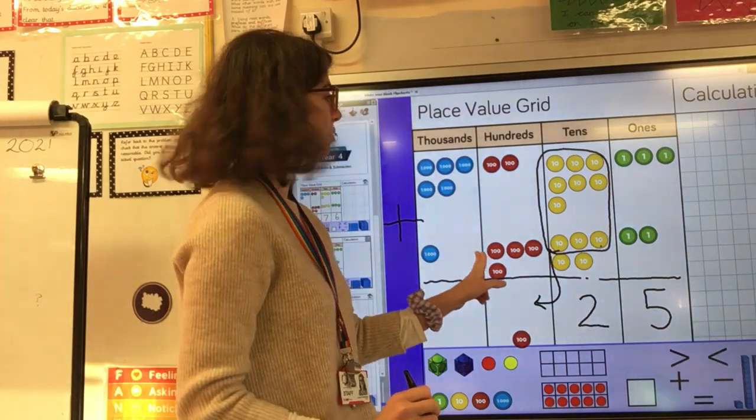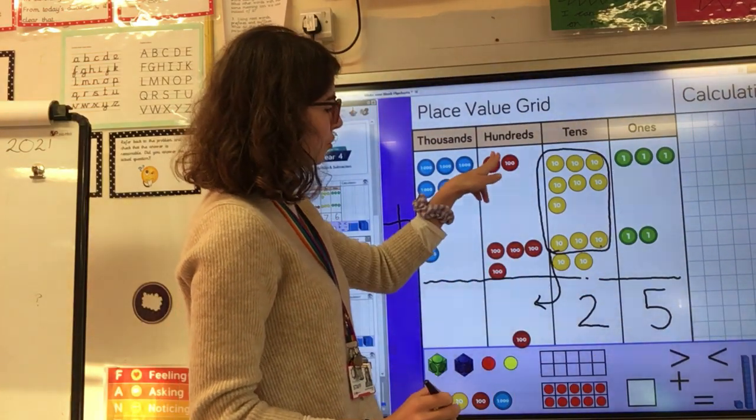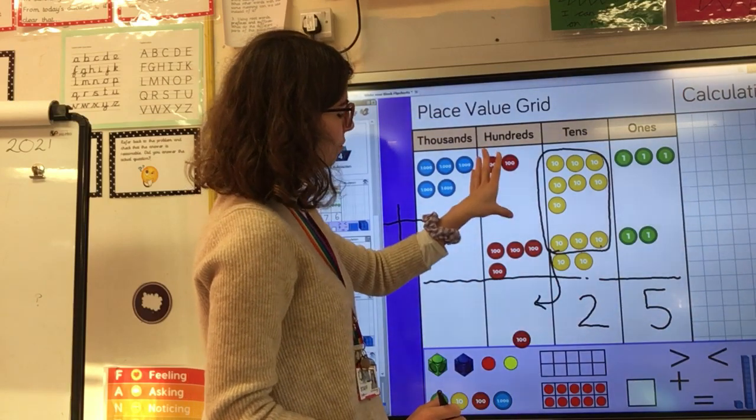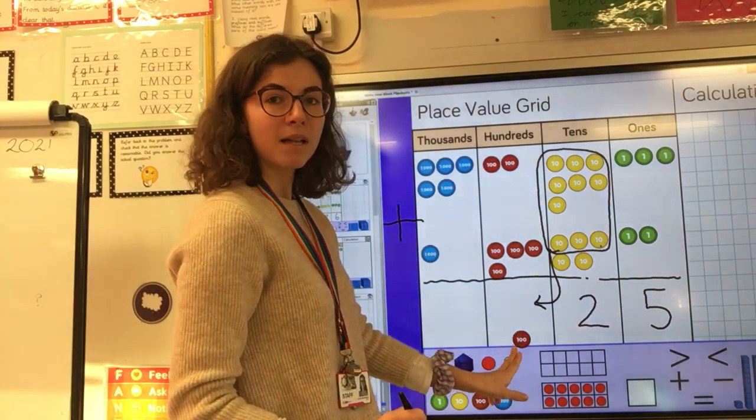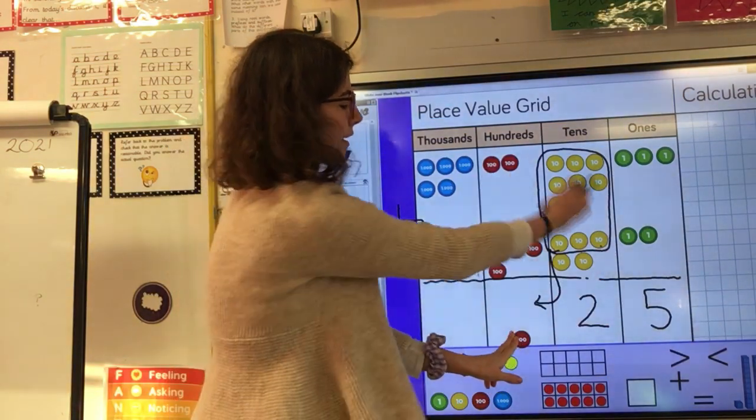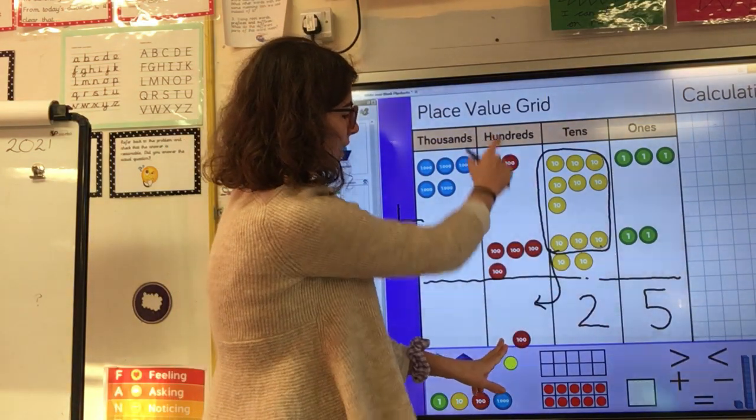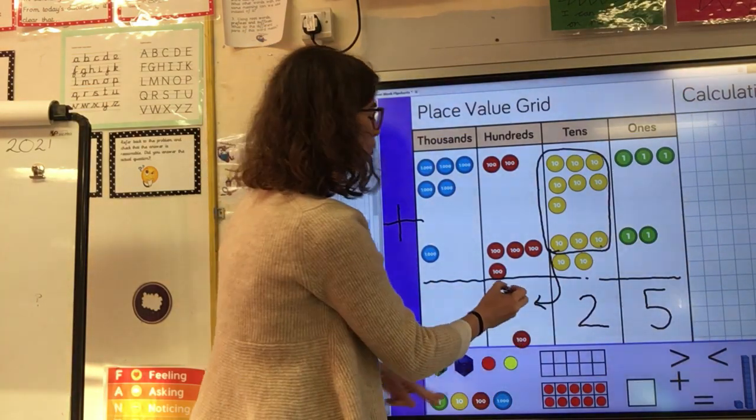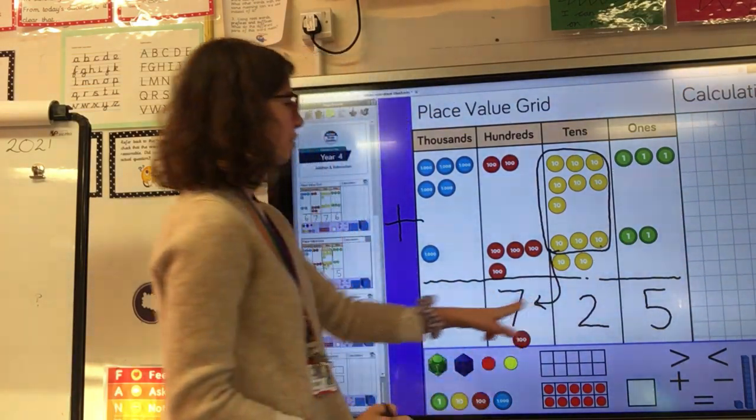Now I can move on to my hundreds column. I've got two hundreds plus four hundreds. Well that gives me six hundreds all together but I mustn't forget about this hundred that I exchanged. I've got six hundreds plus another hundred. That gives me seven hundreds.